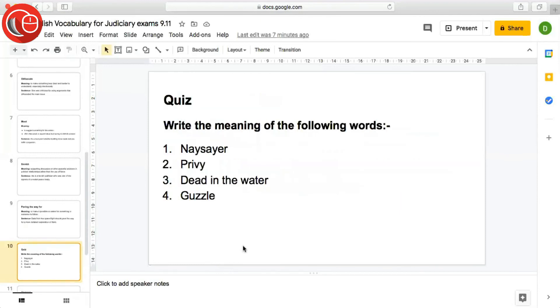So these were the words for the day. Now it's time for the quiz. Please write the meaning of the following words. First word is naysayer. Second, privy. Third, dead in the water. Fourth, guzzle. Please write the meaning of the following words.